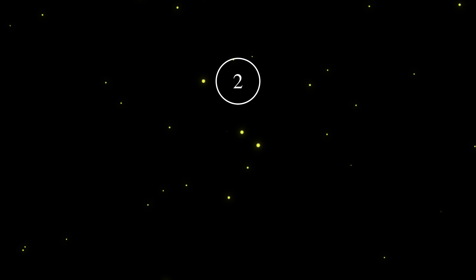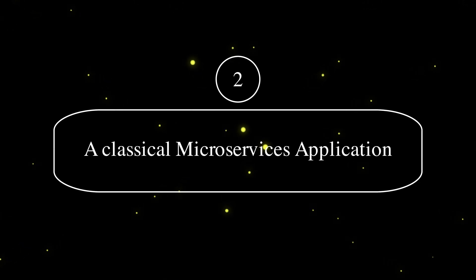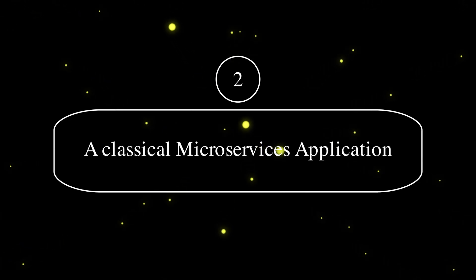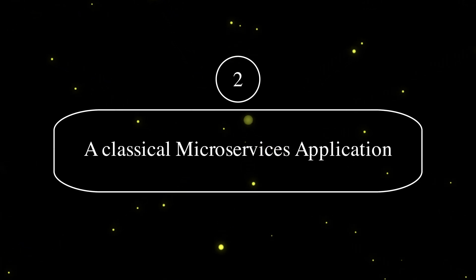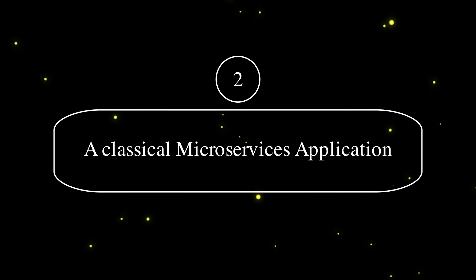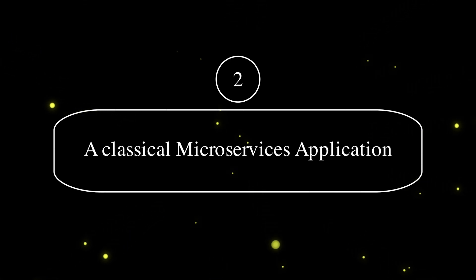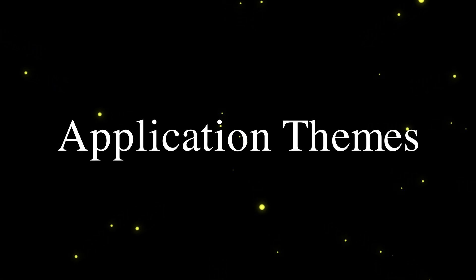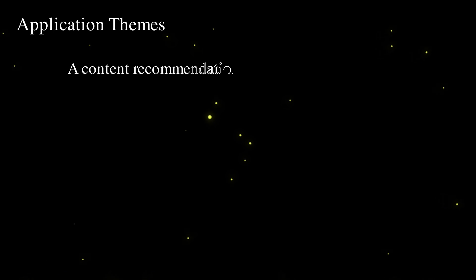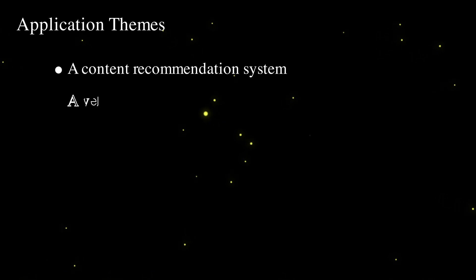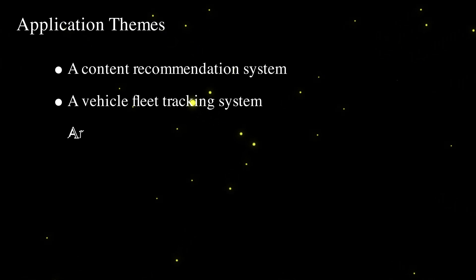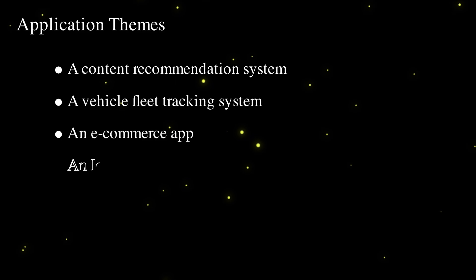Number two: a classical microservice-based application. I'm sure that lots of you already know the main idea about microservices, but I'm not sure how many of you have implemented a complete microservice architecture from scratch. Drop a comment below if you did that and tell me how it worked for you. For this project, you can choose any application theme that can be implemented as a set of microservices — for example, a content recommendation system, a vehicle fleet tracking system, an e-commerce app, an IoT device management system, and others.